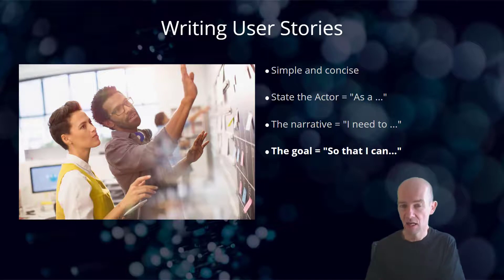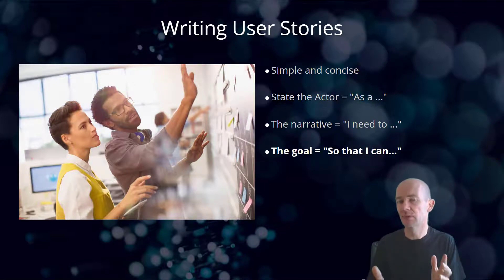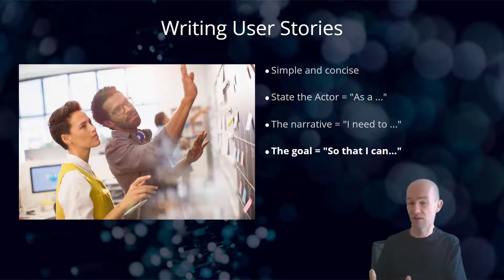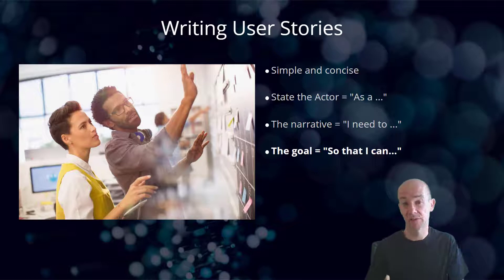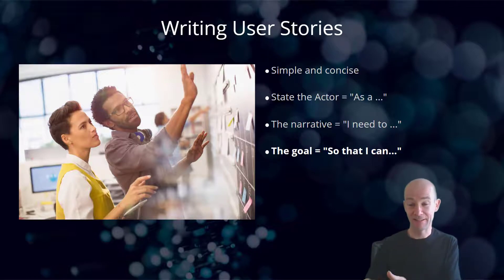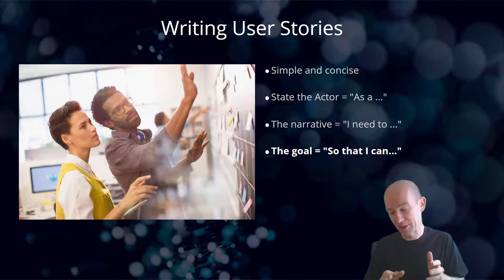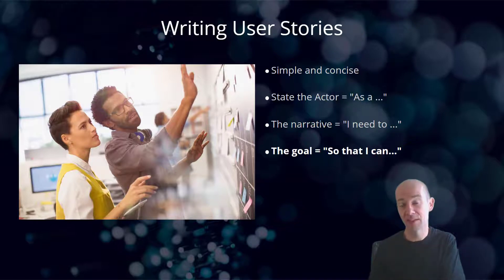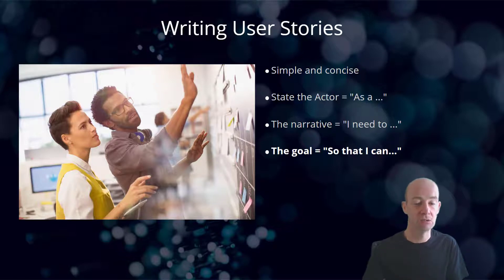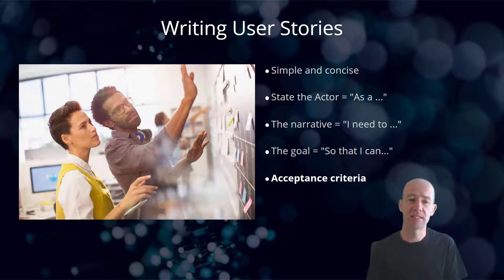Then you go on to say 'so that I can', and it's important to have that phrase because you don't want this to be a wish list of things they think they should have — it really puts it in context to show how important that particular thing is. For instance: 'As a HR manager, I need to see a list of the status of the onboarding tasks so that I can ensure that when someone arrives in the business, they do so successfully.' That might be a user story.